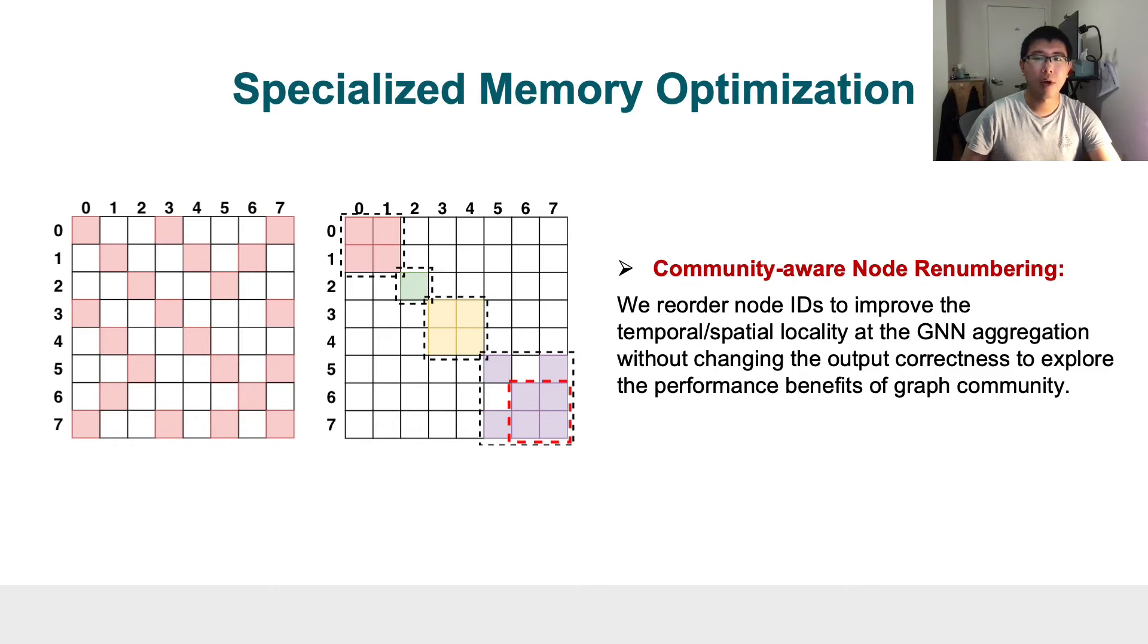Next, I would like to discuss our specialized memory optimization. The first technique is community-aware node renumbering. We reorder node IDs to improve the temporal and spatial locality of GNN aggregation. It will explore the performance benefits of graph community without compromising output correctness. As we can see from the left side figure, after node remapping, the original irregular graphs are reshaped into a more regular one in terms of its edge connectivity, which will facilitate exploring the performance benefits of data locality during GNN aggregation computation.